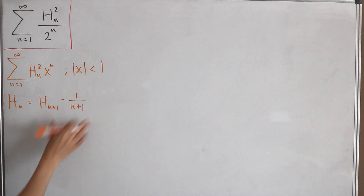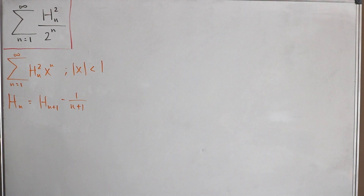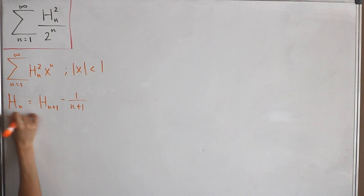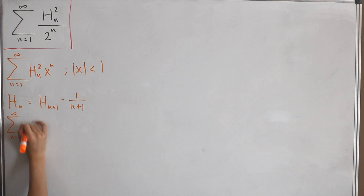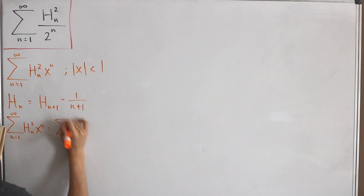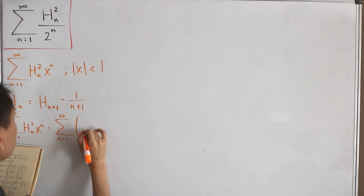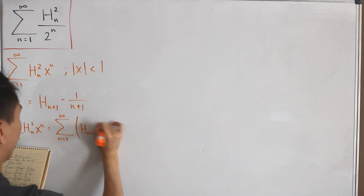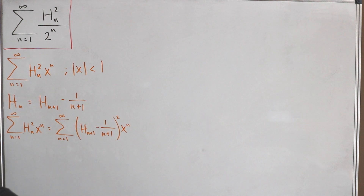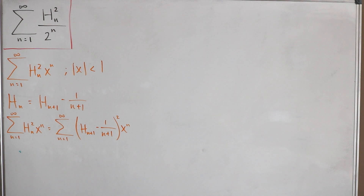With the recurrence relation, let's substitute back into our series. So the infinite sum from n=1 of H_n² · xⁿ equals the sum with H_{n+1} − 1/(n+1) squared, times xⁿ. Expanding using FOIL and applying linearity, we split this into a sum of three separate series.